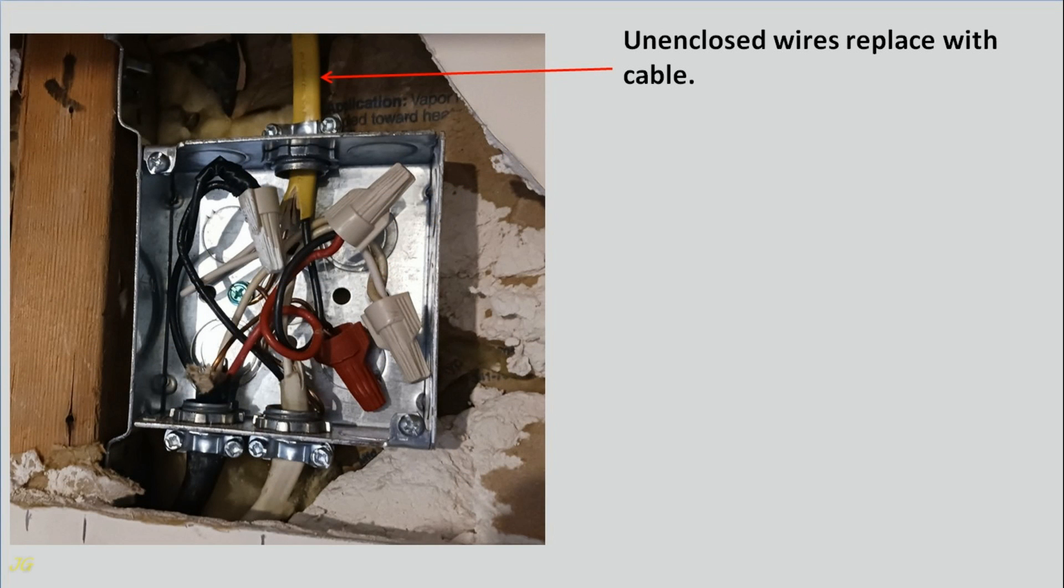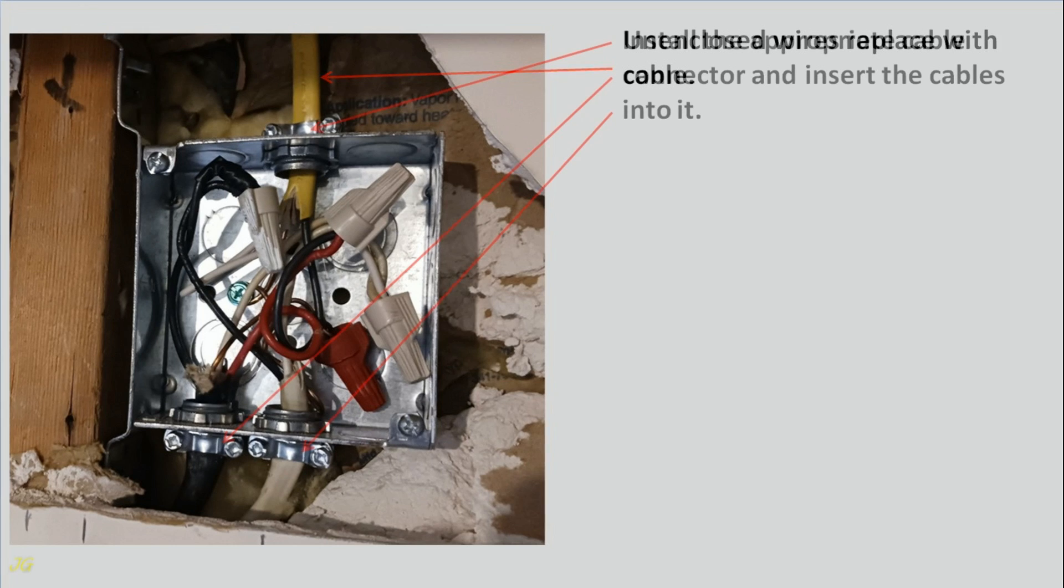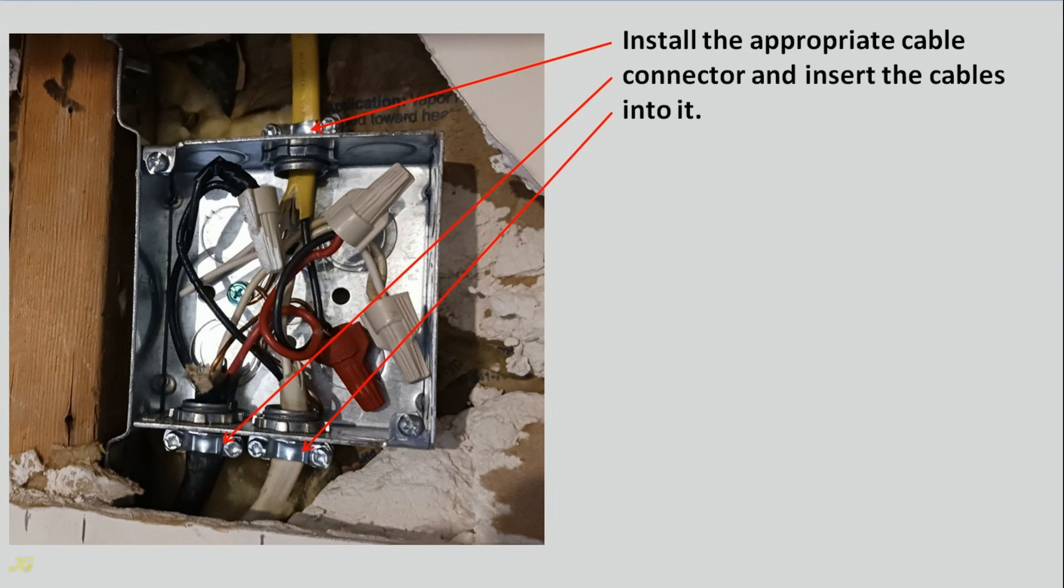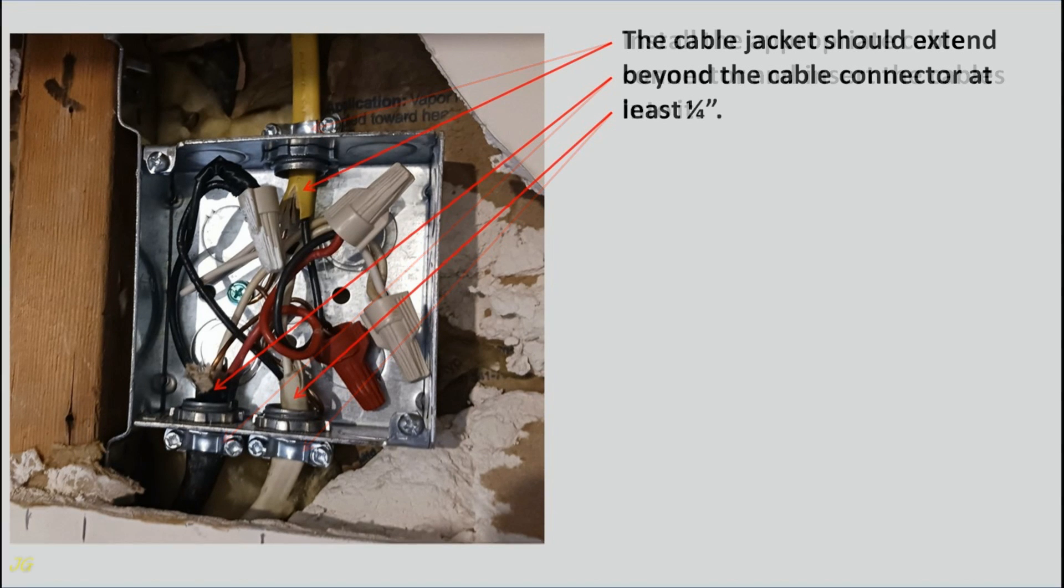Unenclosed wires replace with cable. Install the appropriate cable connector and insert the cables into it. The cable jacket should extend beyond the cable connector at least one quarter inch.